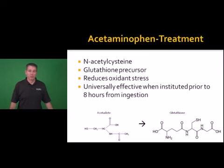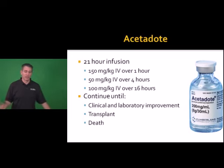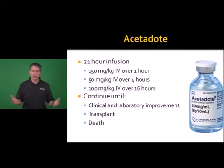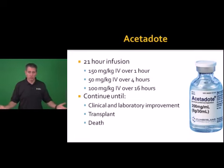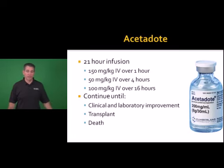The antidote is N-acetylcysteine (brand name Acetadote for IV formulation) — a glutathione precursor and reducer of oxidative stress. It is universally effective in preventing severe liver injury, hepatic failure, and need for transplant if started within eight hours of ingestion. Continue therapy beyond the initial 21-hour infusion with repeated 16-hour infusions of 100 mg/kg until clinical and laboratory improvement is seen — LFTs improving or never elevated, and improving clinical presentation. Continue if worsening until the patient is transplanted or outcomes are terminal.